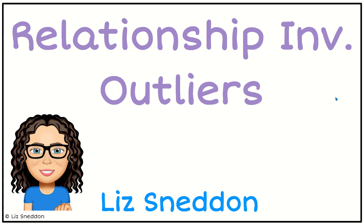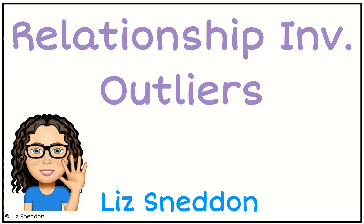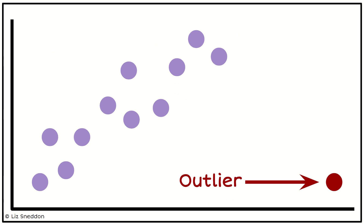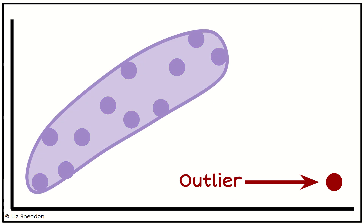Hi, it's Liz Nedden. Let's have a look at outliers for relationship investigations. What we want to do is identify where the main pattern is and then look for points that are quite a long way away from the main pattern. I've drawn a blob around the data to identify the pattern, and you can notice that the outlier is quite a way away from that pattern.